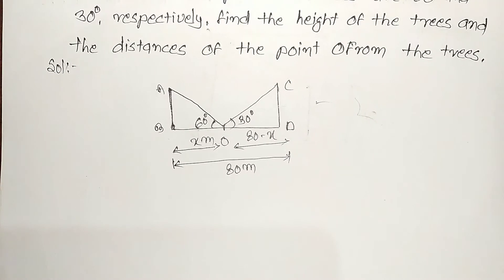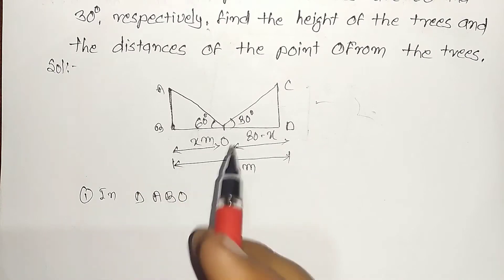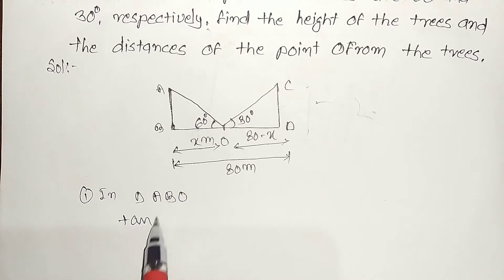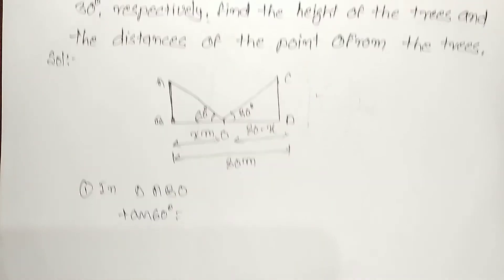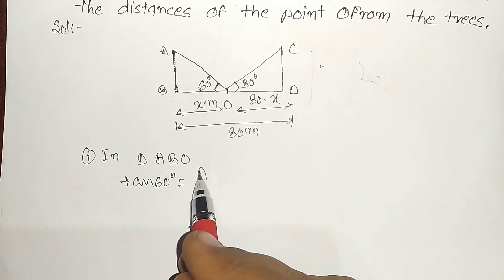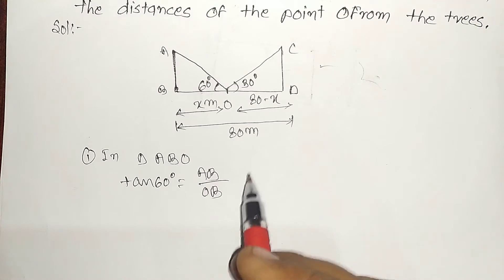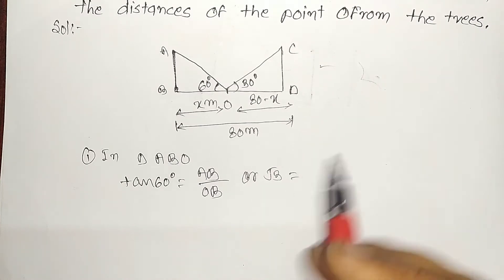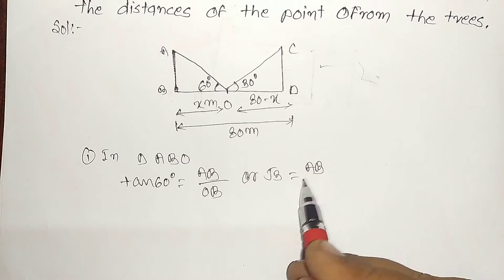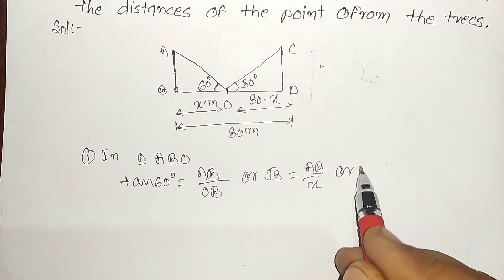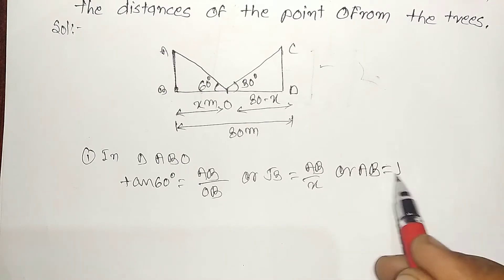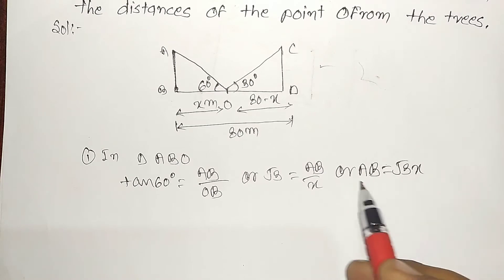We can see in triangle ABO, tan 60 degree equal to AB upon OB. Tan 60 value is under root 3, under root 3 equal to AB upon x. AB equal to under root 3x, this is the equation.